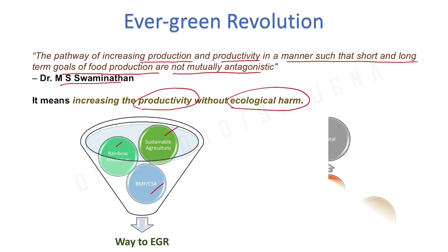What are the obstacles in adopting these practices? The first is capital. Most farmers in India are small and marginal farmers, with landholdings less than one hectare for marginal farmers and one to two hectares for small farmers. More than 85% of farmers have landholdings less than two hectares, meaning they are essentially poor farmers who cannot afford different modern approaches to address these challenges.